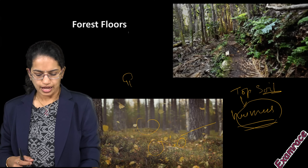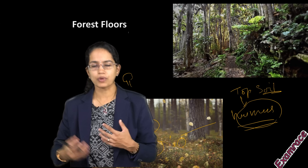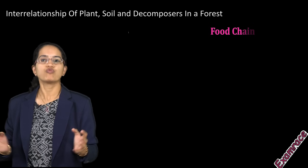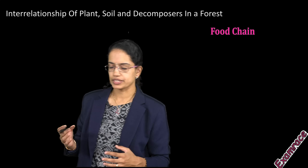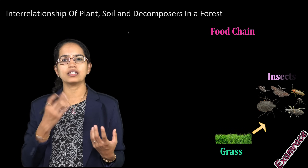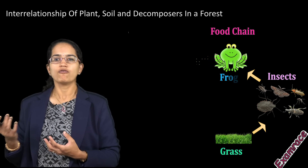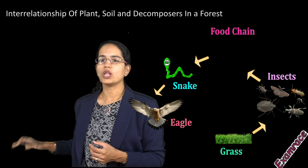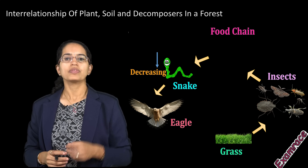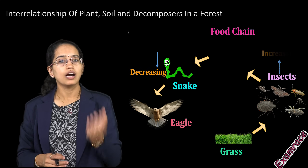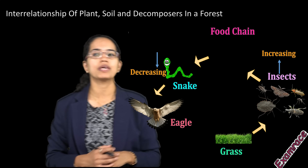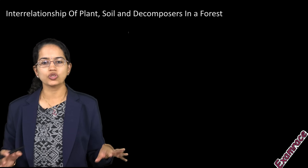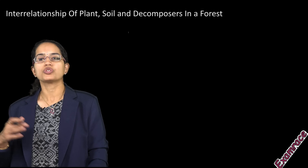The forest is a dynamic region with numerous processes, the most important being the food chain. For example: grass is consumed by an insect, the insect by a frog, the frog by a snake, and the snake by an eagle. If all the frogs are removed, the snake population would drastically decline and the insect population would increase, creating an ecological imbalance. Similarly, when forests are destroyed, ecological imbalances are created.